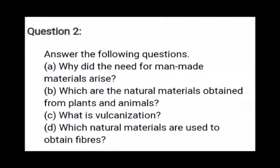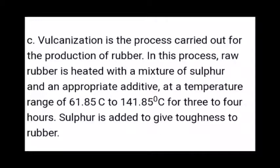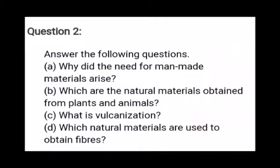C) What is vulcanization? Vulcanization is the process carried out for the production of rubber. In this process, raw rubber is heated with a mixture of sulfur and an appropriate additive at a temperature range of 61.85°C to 141°C for three to four hours. Sulfur is added to give toughness to rubber.